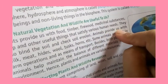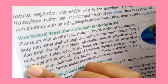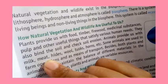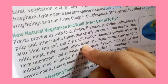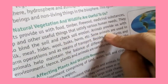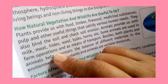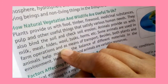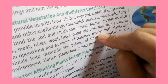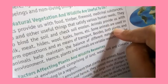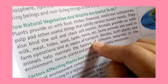Animals provide us with milk, meat, wool, and other products. Some animals are used in farm operations and as a means of transport. Both plants and animals help to maintain the balance of different materials in the environment.